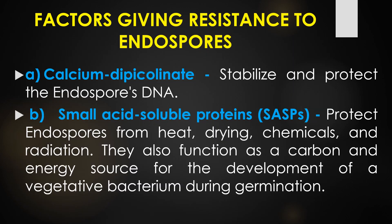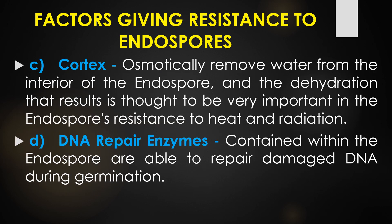Four factors give resistance to the endospores. The first is calcium dipicolinate, which stabilizes and protects the endospore DNA. The second is small acid-soluble proteins, or SASPs, which protect endospores from heat, drying, chemicals, and radiation, and also function as a carbon and energy source during germination. The third is the cortex, which osmotically removes water from the interior of the endospore; this dehydration is important for resistance to heat and radiation. The fourth is DNA repair enzymes, contained within the endospores, which repair damaged DNA during the germination process.